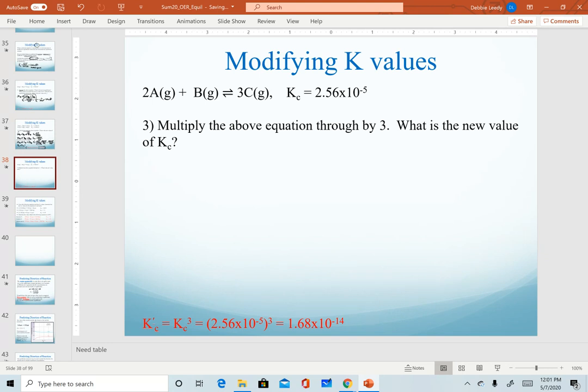The last option is if we multiply an equation through by a constant. And three was chosen randomly. But if I had different coefficients that were a multiple of something, either multiplying through by two or by three, let's see how that will change our expression. So I'm writing my equation, multiplying everything through by a three. When I go to write my new, my prime Kc expression, I have C raised to the ninth. A is raised to the sixth. And B is raised to the third.